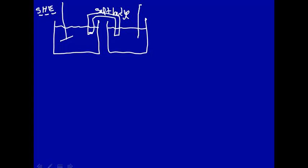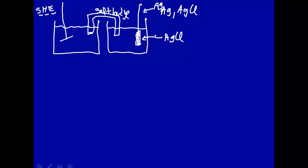On the other side, let's put a silver–silver chloride electrode. A silver–silver chloride electrode has a piece of silver wire on which some silver chloride has been deposited. You'll learn more detail about this in Chem 422, Instrumental Analysis, if you decide to take that course — you have to take it if you're BS.